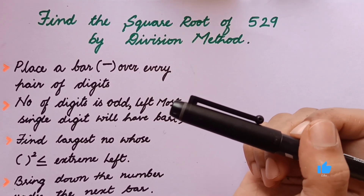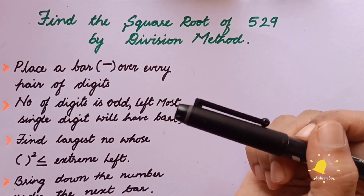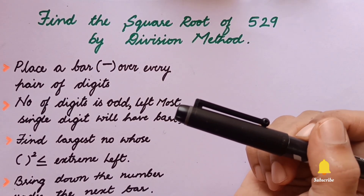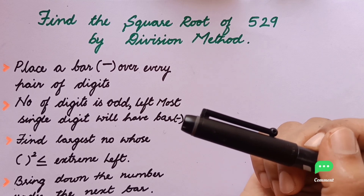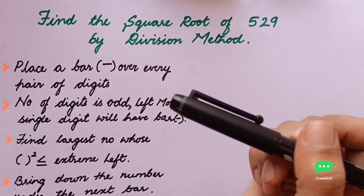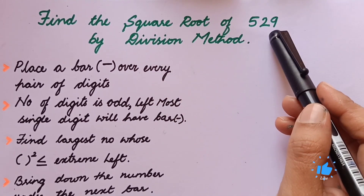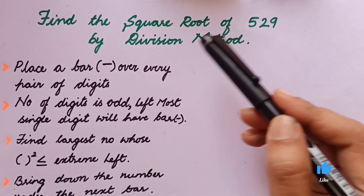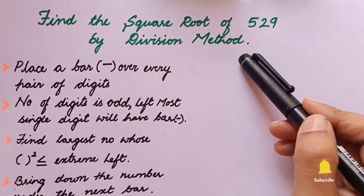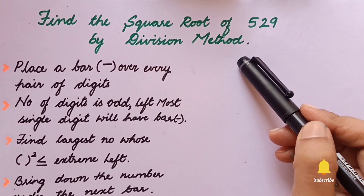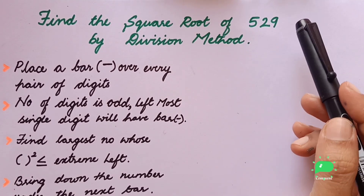Hi everyone, welcome back to my channel Train Tutor. In this session I'm going to solve the problem of finding the square root of 529 by the division method.